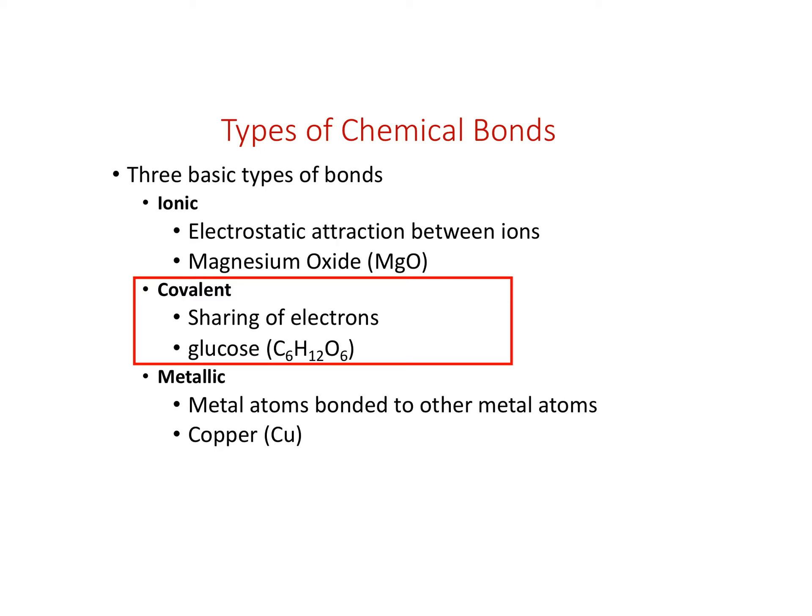So in our previous lecture, we looked at ionic bonds — for example, the formation of magnesium fluoride in terms of the Lewis dot diagram of magnesium losing two valence electrons and the fluorines each gaining one valence electron. And then we got into briefly looking at covalent bond formation.